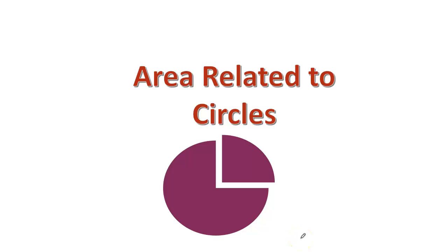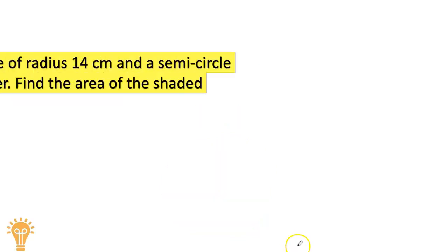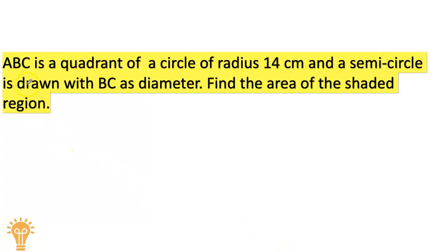Hi, welcome to another topic on area related to circles. Let's look at the question: ABC is a quadrant of a circle of radius 14 centimeters, and a semicircle is drawn with BC as diameter. Find the area of the shaded region.